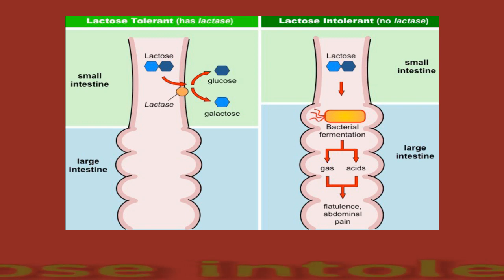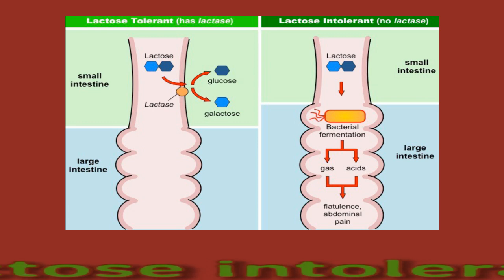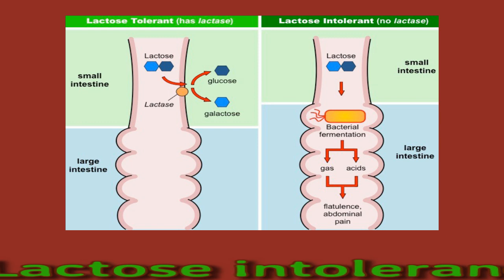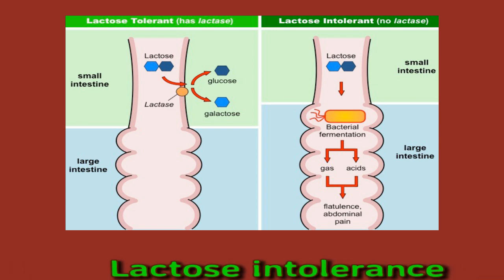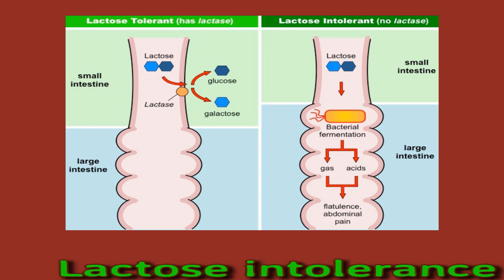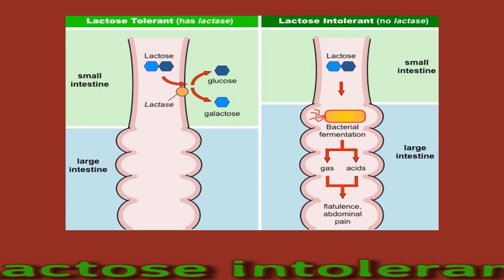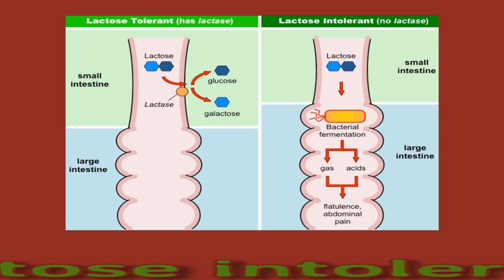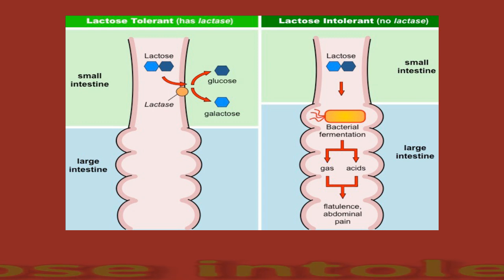A person who is lactose intolerant has difficulty digesting milk and milk-based products such as cheese and yogurt. This is because they lack sufficient amounts of an enzyme called lactase. Lactase breaks down the lactose in milk, which consists of the simple sugars glucose and galactose. People with lactose intolerance are unable to digest all the lactose from food and drink. Unabsorbed lactose passes into the colon, where bacteria break it down to create gas and fluid, causing symptoms such as abdominal pain, loose stool or diarrhea, bloating, gas, and nausea.